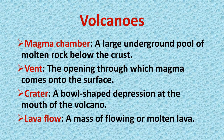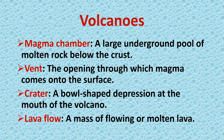If you look at the cross-section of a typical volcano, you will notice various parts: the magma chamber, vent, crater, and lava flows. The magma chamber is a large underground pool of molten rock below the crust. The vent is the opening through which magma comes out on the earth's surface. The crater is a bowl-shaped depression at the mouth of the volcano through which ashes and different gases are thrown out. Lava flows are a mass of flowing or molten lava.